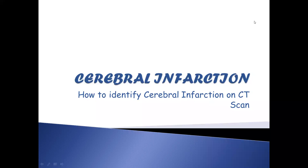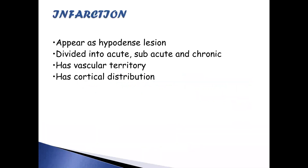Hello everyone. Today we'll be talking about cerebral infarction — specifically how to identify cerebral infarction on a CT scan. Infarction usually appears as a hypodense lesion and is divided into acute, subacute, and chronic.